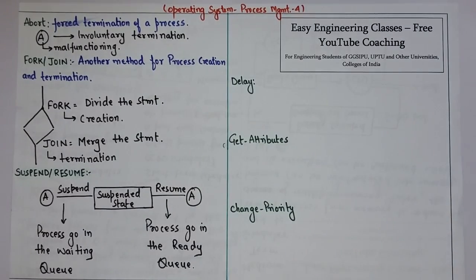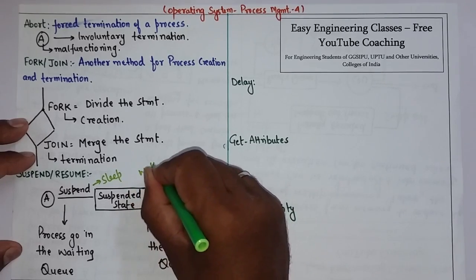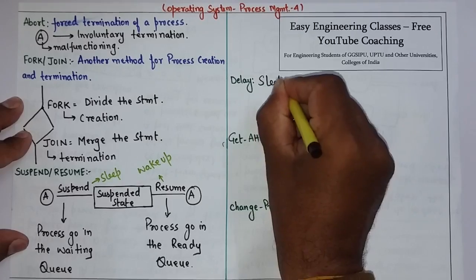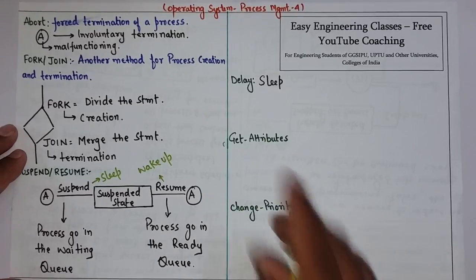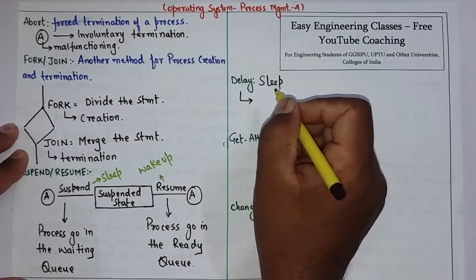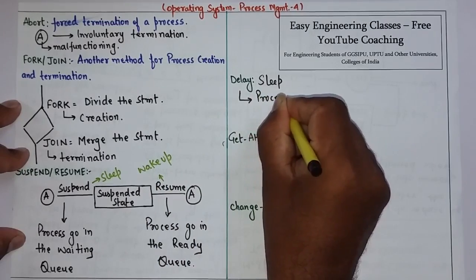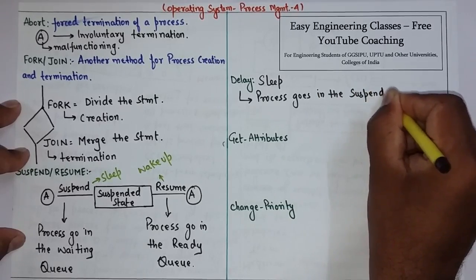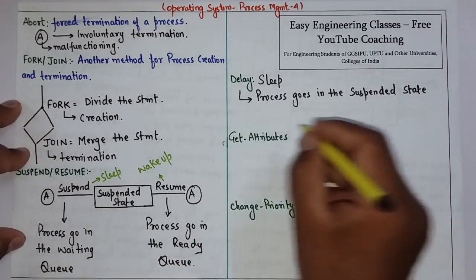In some systems, suspend and resume are also known as sleep and wake up. Then we have delay, which is essentially an intended sleep. In delay, a process is suspended for a specified duration of time. There is no external trigger required — the process goes into the suspended state for the specified duration and once that time is done, the process itself resumes and goes into the ready queue.